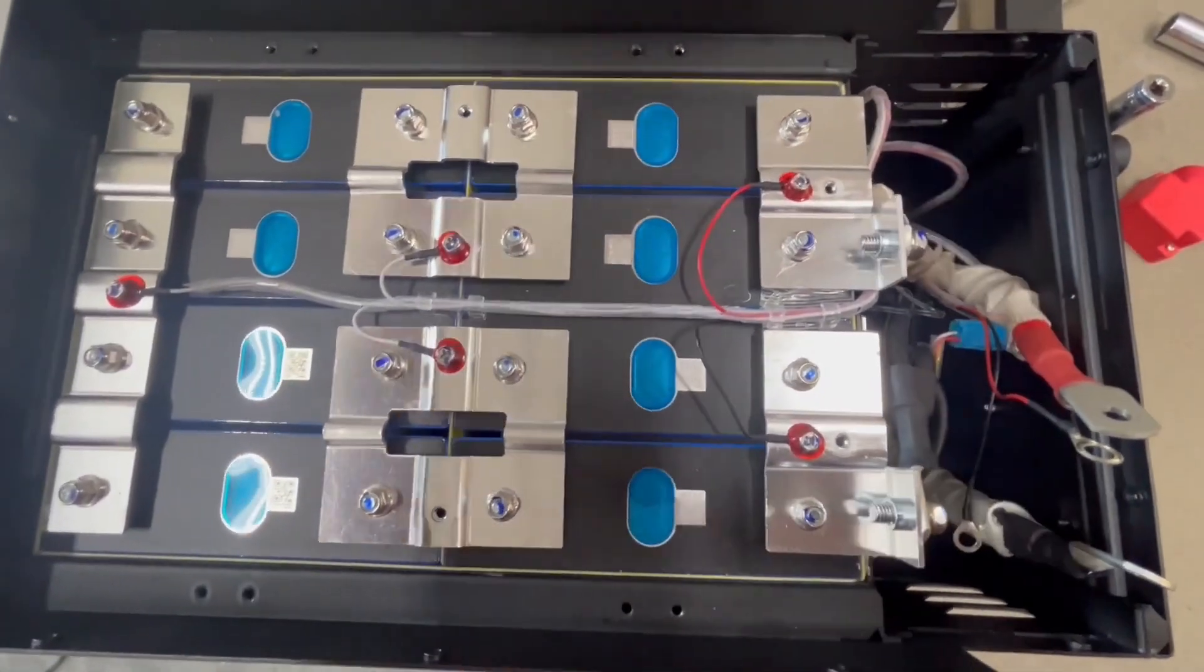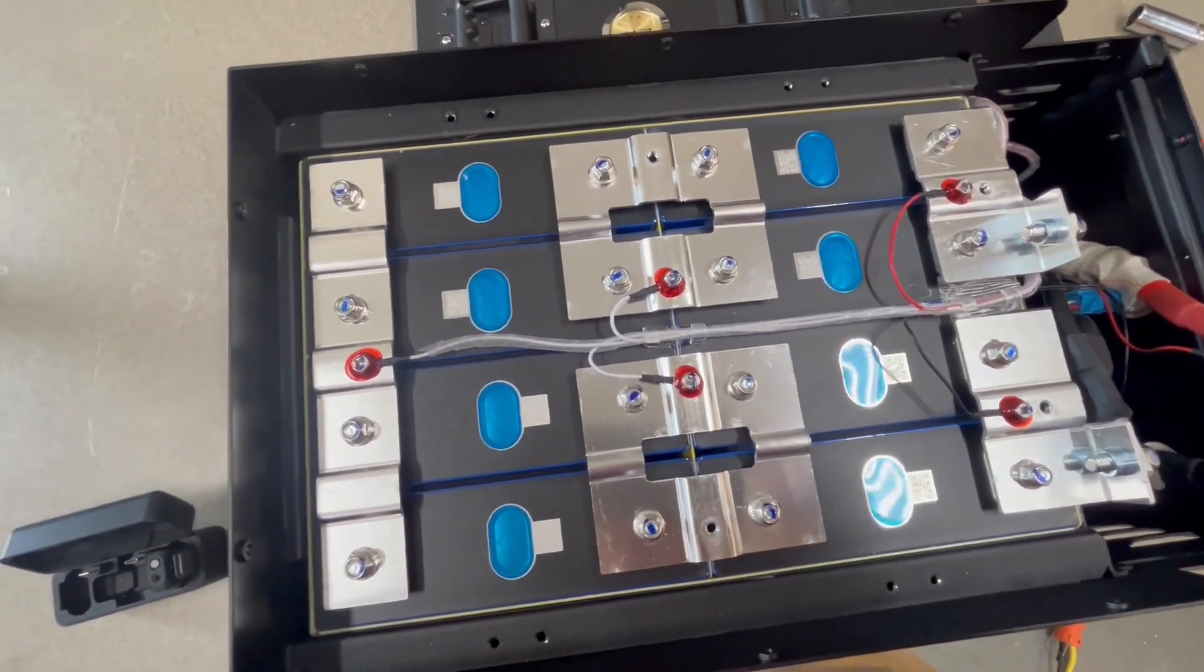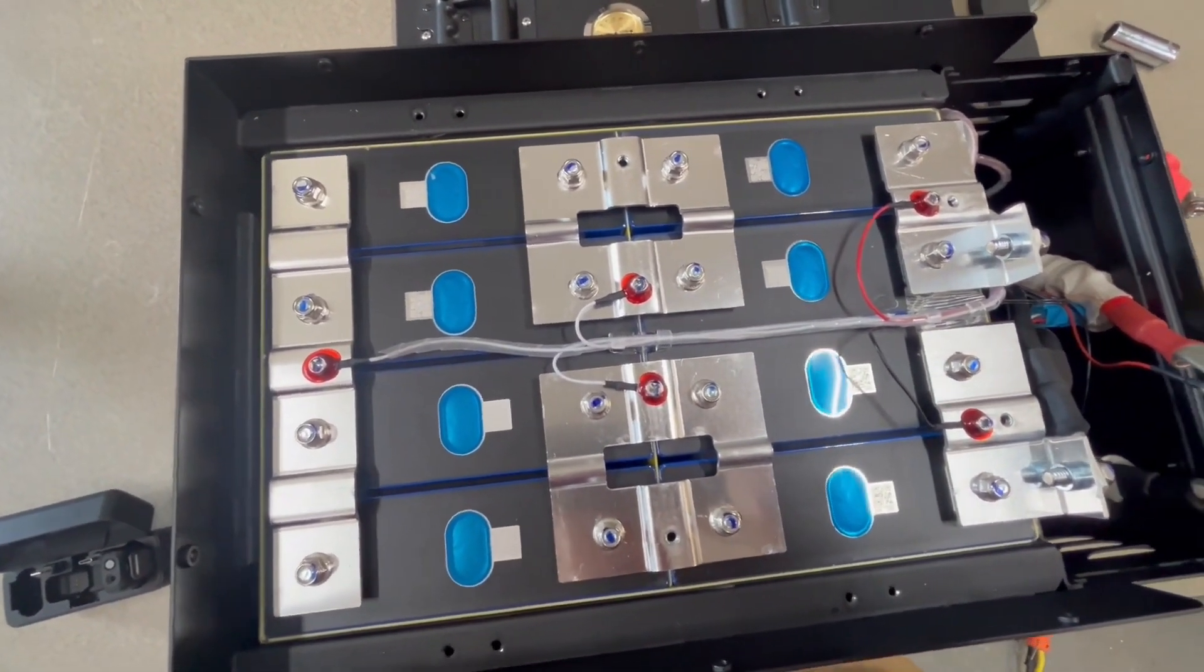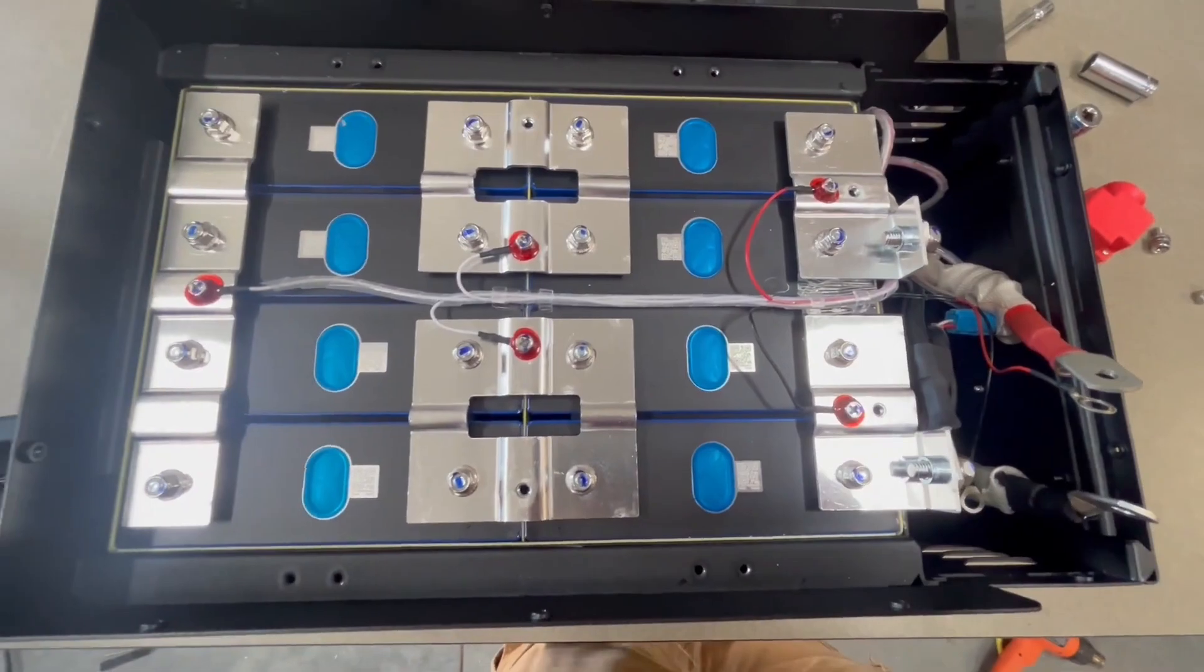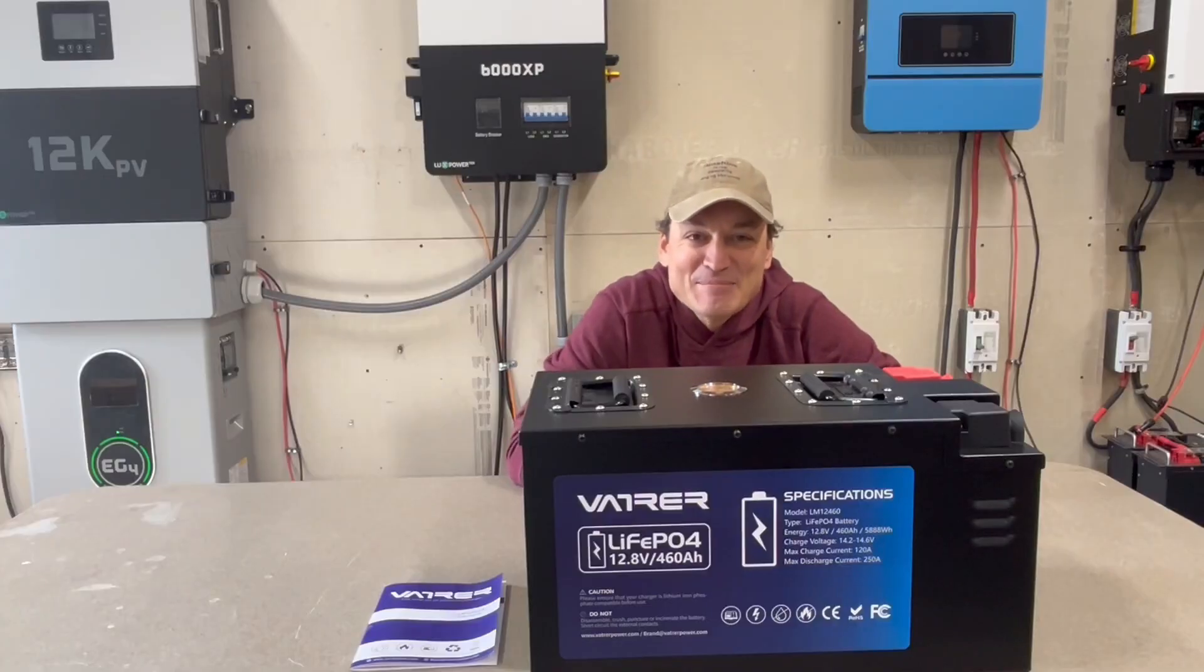Every single battery is a box with prismatic cells in it if it's lithium iron phosphate, or it should be anyway. I don't recommend anyone get pouch cells. All right guys, so that's going to about wrap this up. This is a nice battery. You've got 460 amp hours of usable storage here and by our testing you actually have a smidge more than that.